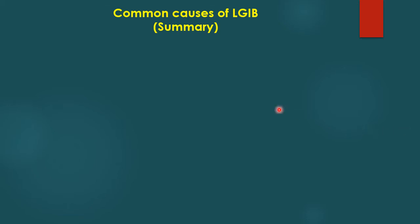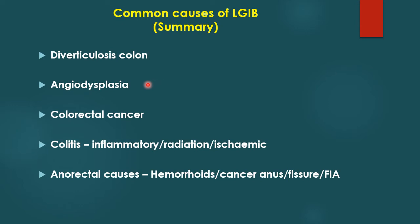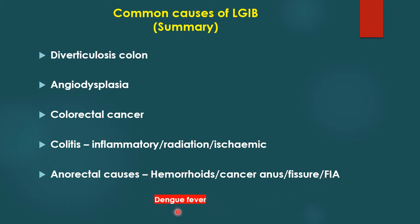The five most common causes of lower GI bleed in our country are diverticulosis, angiodysplasia, colorectal cancer, colitis of various causes — inflammatory, radiation, ischemic — and anorectal causes especially hemorrhoids, cancer anus, fissure anus, and fistula anus. Dengue fever should not be forgotten; the low platelet count is an indicator of the possibility of passing bloodstained stools.